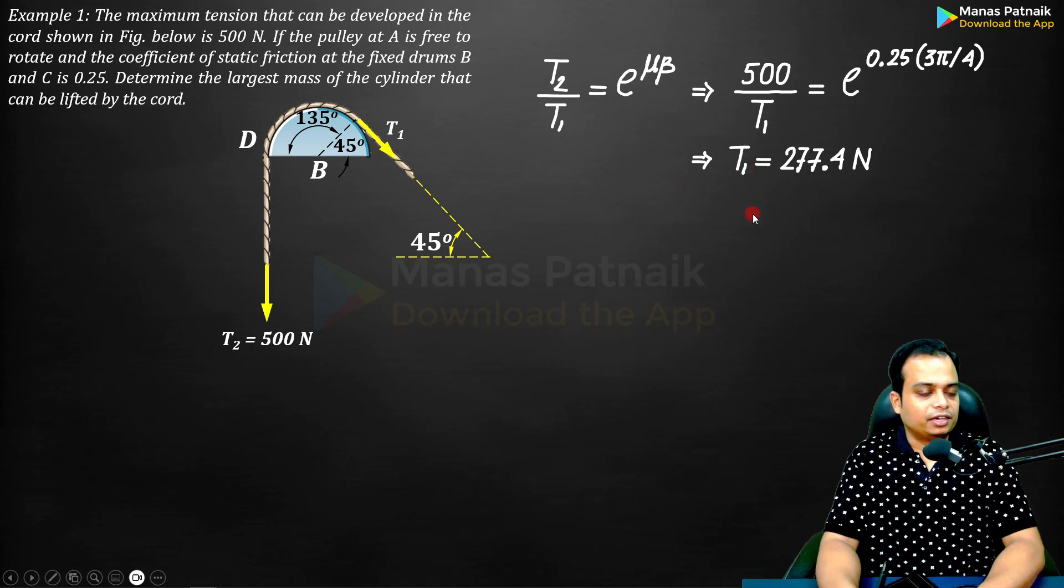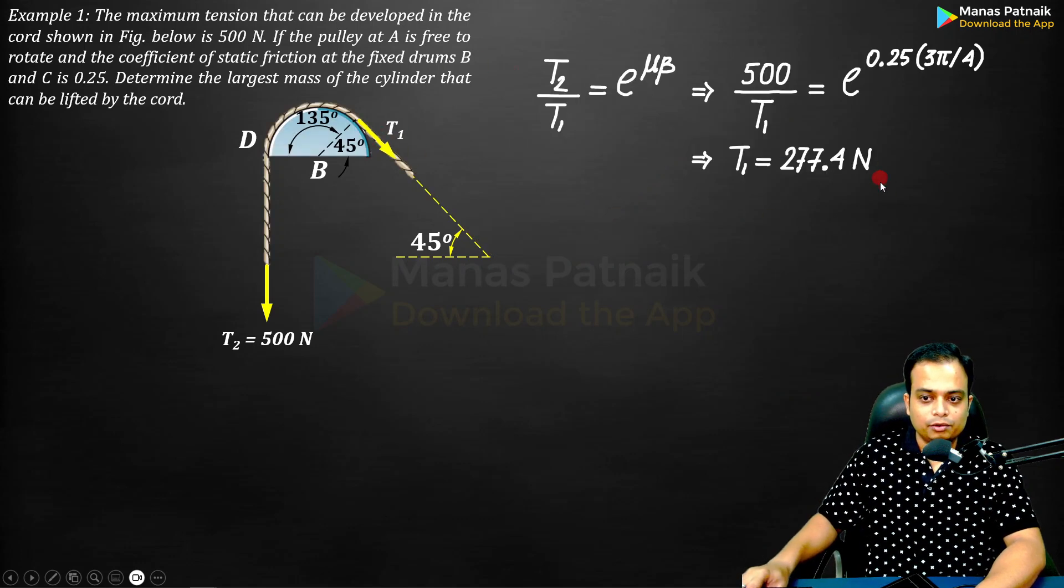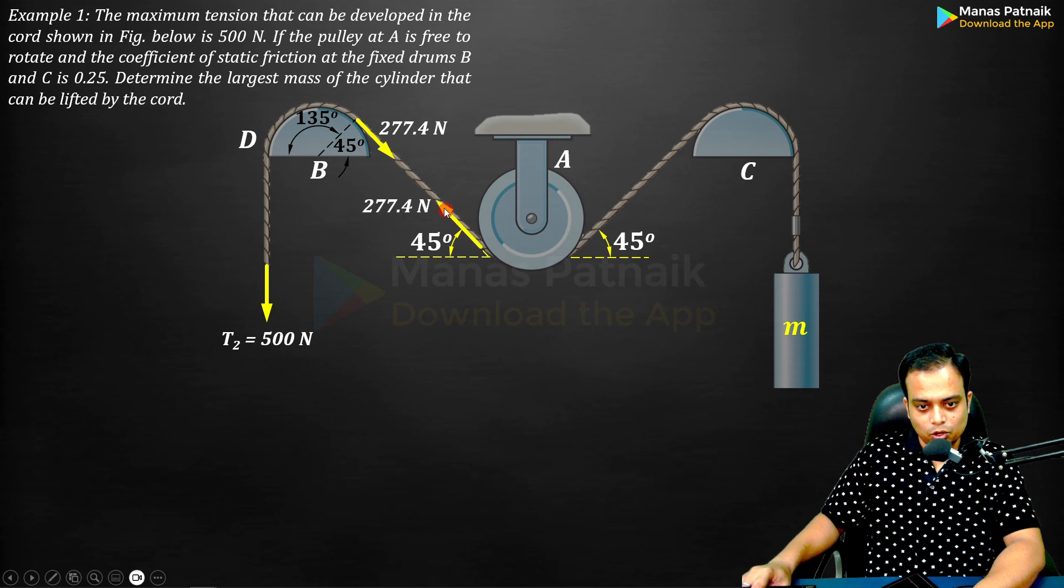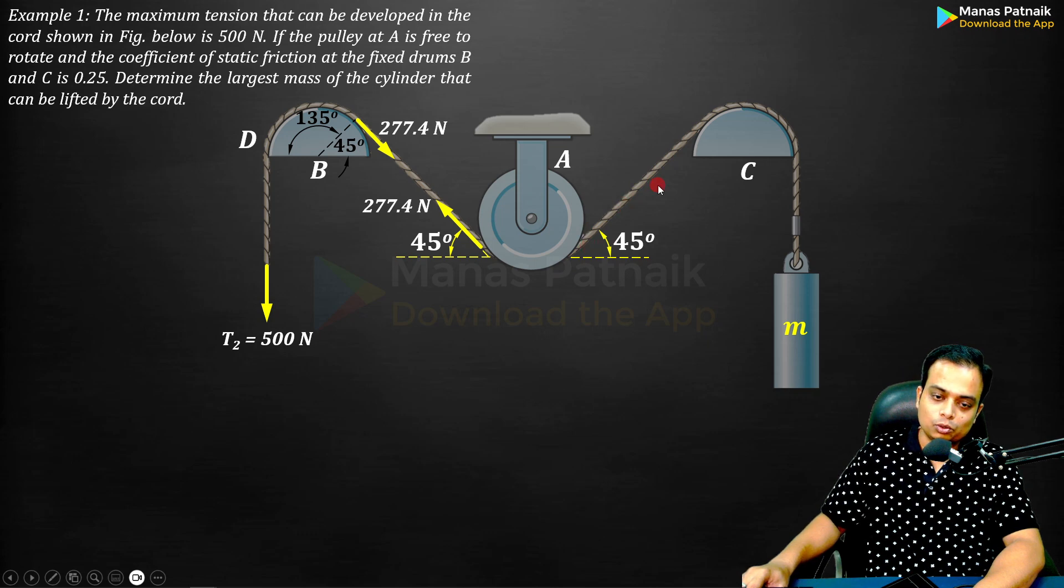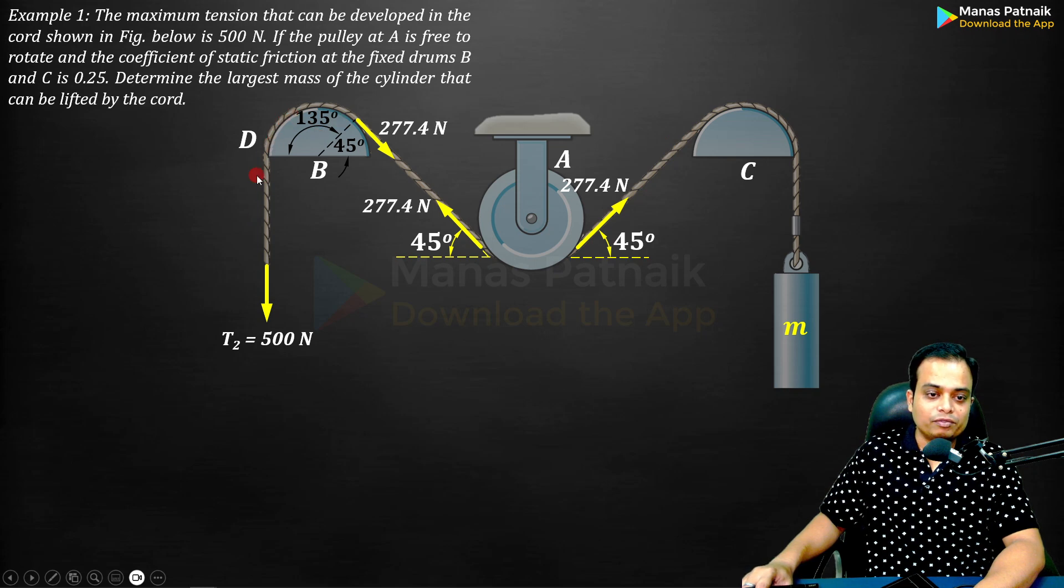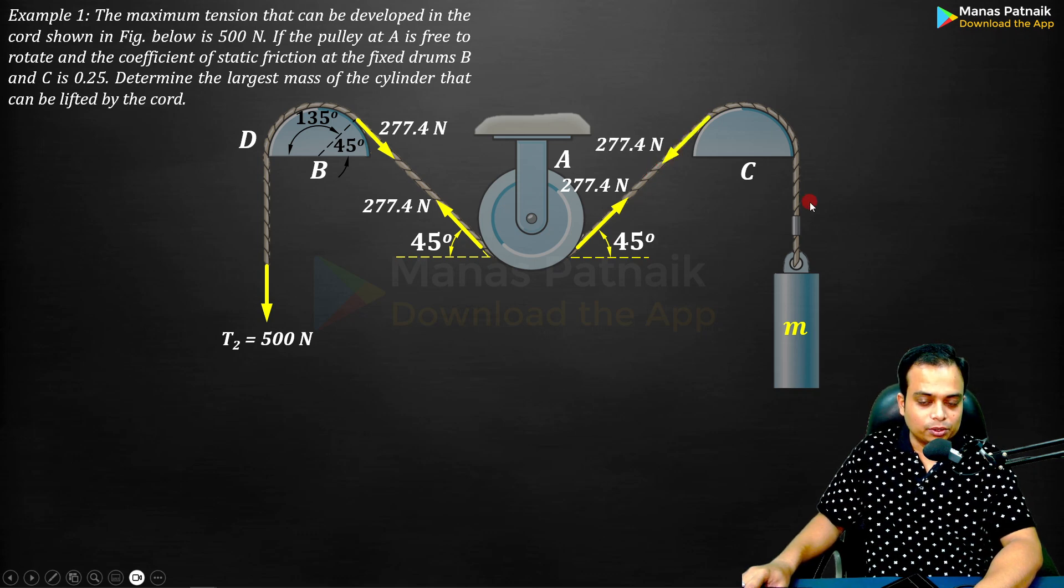Let me update the entire figure. This is T1, 277.4. If this is 277, this also is going to be 277. This pulley is free to rotate, so on the other side of the pulley the same chord is there, also 277.4. The friction is at the drums B and C. On both sides of the drum, the values of tension are going to be different, but not at the pulley.